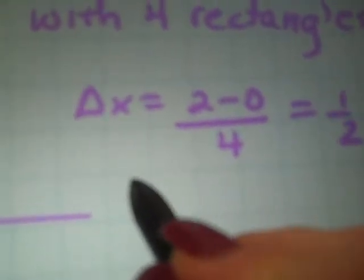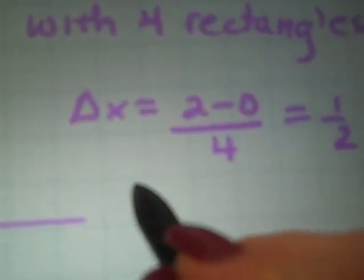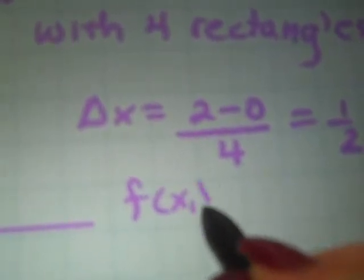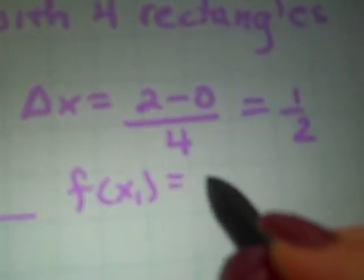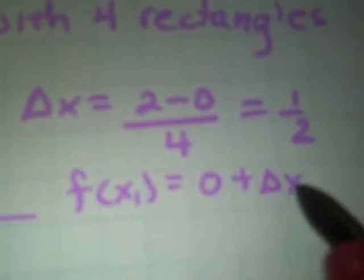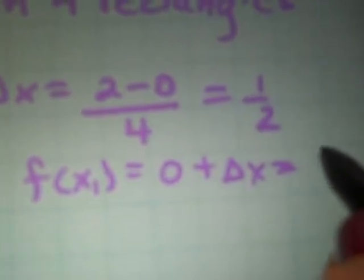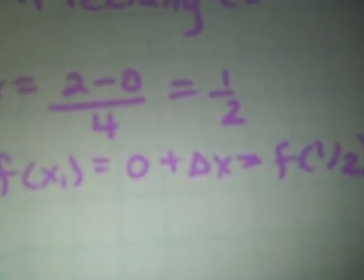The first endpoint that we used is, for this example, is the second one we used in the first example. So, our first value we used is going to be 0 plus delta x. So, it's going to be f of 1 half. Let me draw the picture in. We're going to have f of 1 half, f of 1, f of 3 halves. There's f of 2.